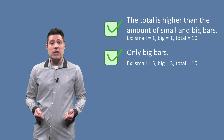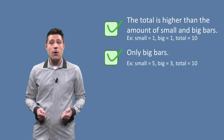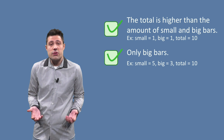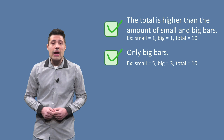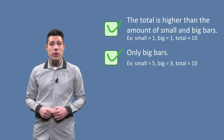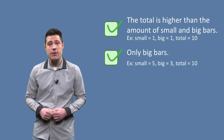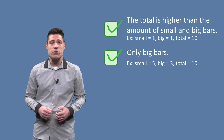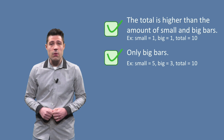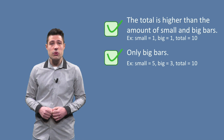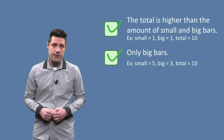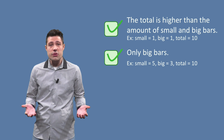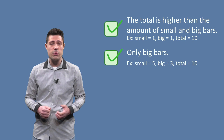Another partition is when we don't need small bars, as only using big bars is enough. An instance for this partition can be small equals 5, big equals 3, and total equals 10. With total being 10, we can use two big bars. There is no need for small bars, and thus the program must return 0.